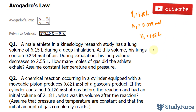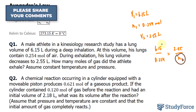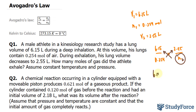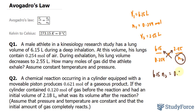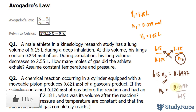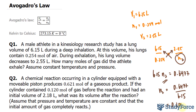How many moles of gas did the athlete exhale? Substituting into the formula: 6.15 over 0.254 is equal to 2.55 over N₂. We'll be solving for N₂. Cross multiplying: N₂ times 6.15 is equal to 0.254 times 2.55. Using a calculator, 0.254 times 2.55 gives us 0.6477. Dividing both sides by 6.15, we get N₂ equals 0.1053 moles.